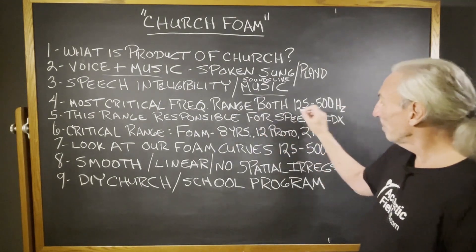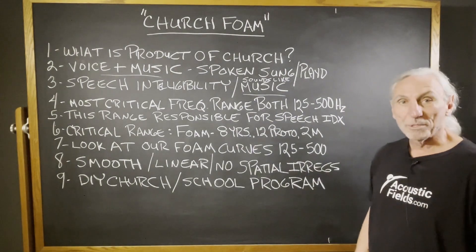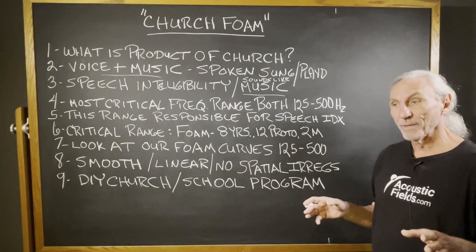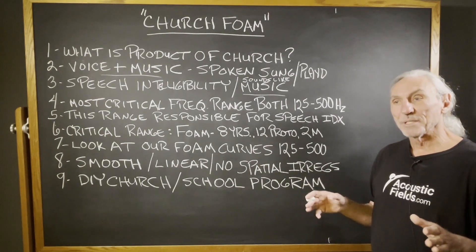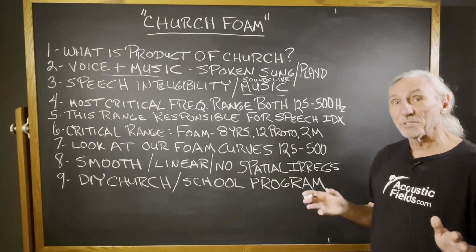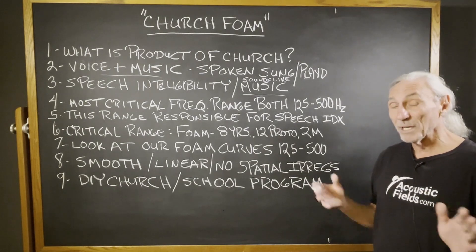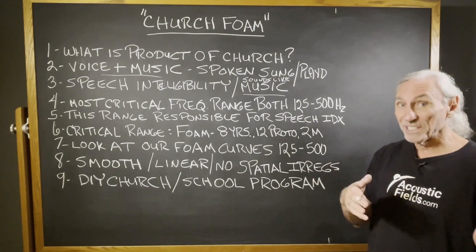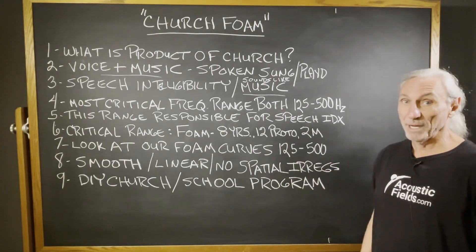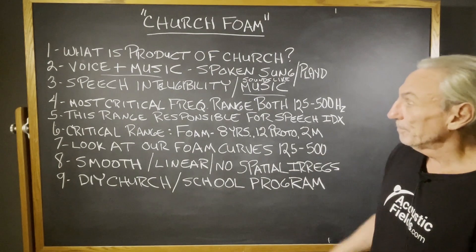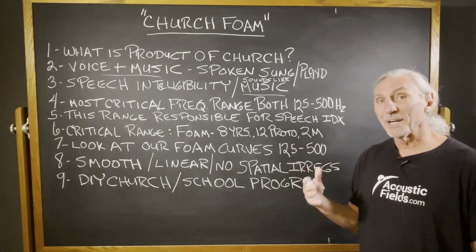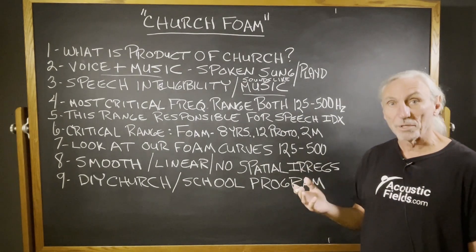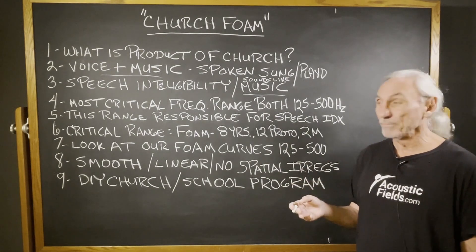This range — 125 to 500 Hz — is directly responsible for the speech intelligibility index. Speech intelligibility is how many words in a 10-word sentence you can understand. You have to hear it first before you have comprehension, so you need listening, hearing, and comprehension. In churches, we try to get 80% or better, meaning eight out of every 10 words in a sentence are heard and hopefully understood.